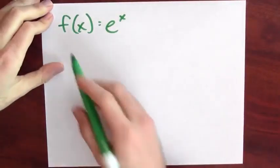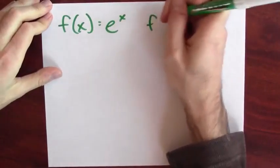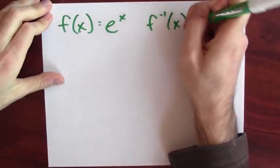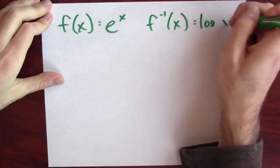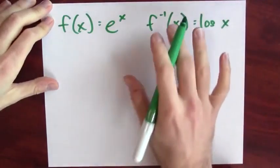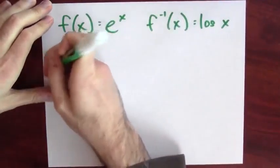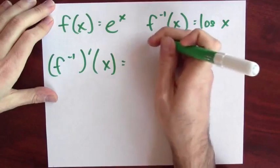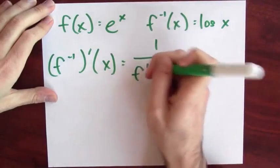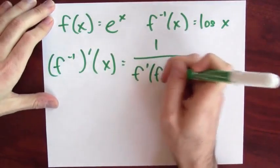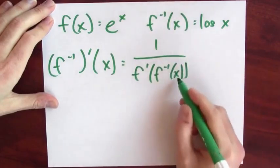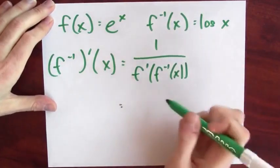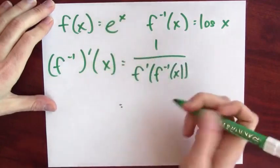Once we've got this new function log, we can ask, what's the derivative of log? So if f of x is e to the x, the inverse function is log. If I want to now differentiate log, I can use the inverse function theorem. So the derivative of the inverse function is 1 over the derivative of the original function evaluated at the inverse function of x.